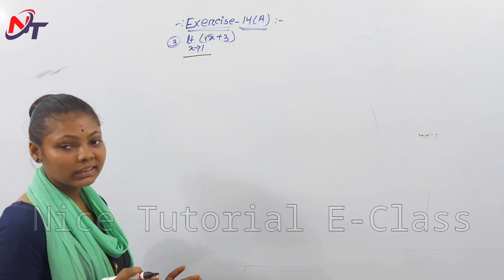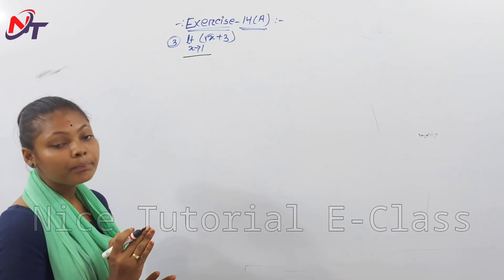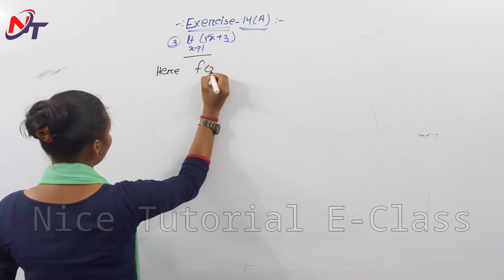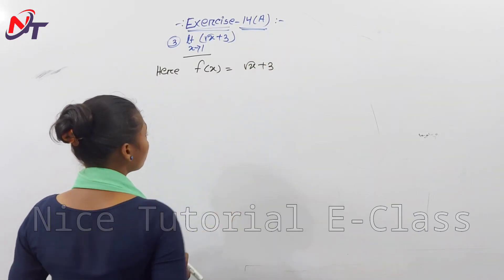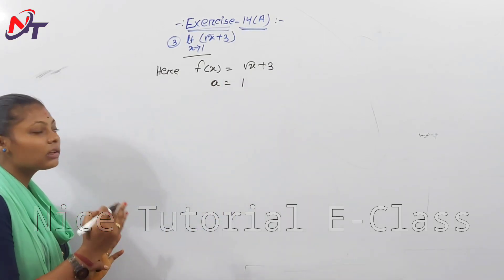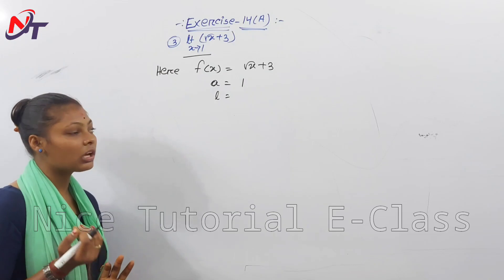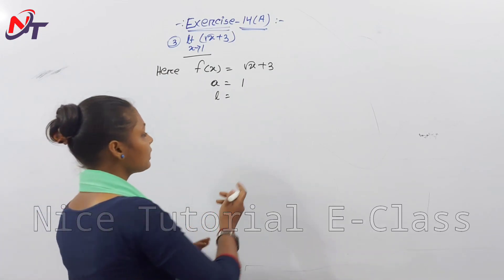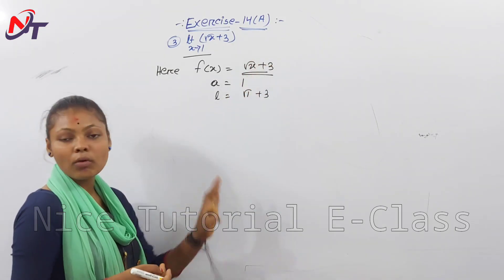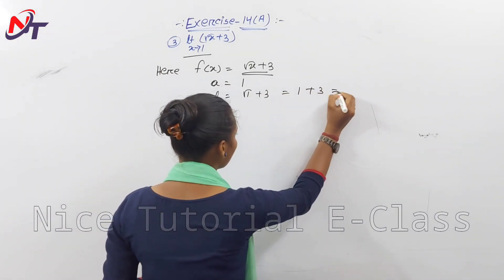The first step is to define f of x, which is the function. Then we define the limit value. f of x is equal to root x plus 3, and a is equal to 1. Then the limit value L: f of x where x equals 1 is equal to root of 1 plus 3, which equals root 4, that is equal to 4.